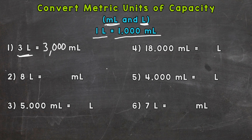Number two: eight liters equals how many milliliters. We have a group of a thousand milliliters, plus a thousand, plus a thousand — eight times — or we could do eight times a thousand, which equals eight thousand milliliters.